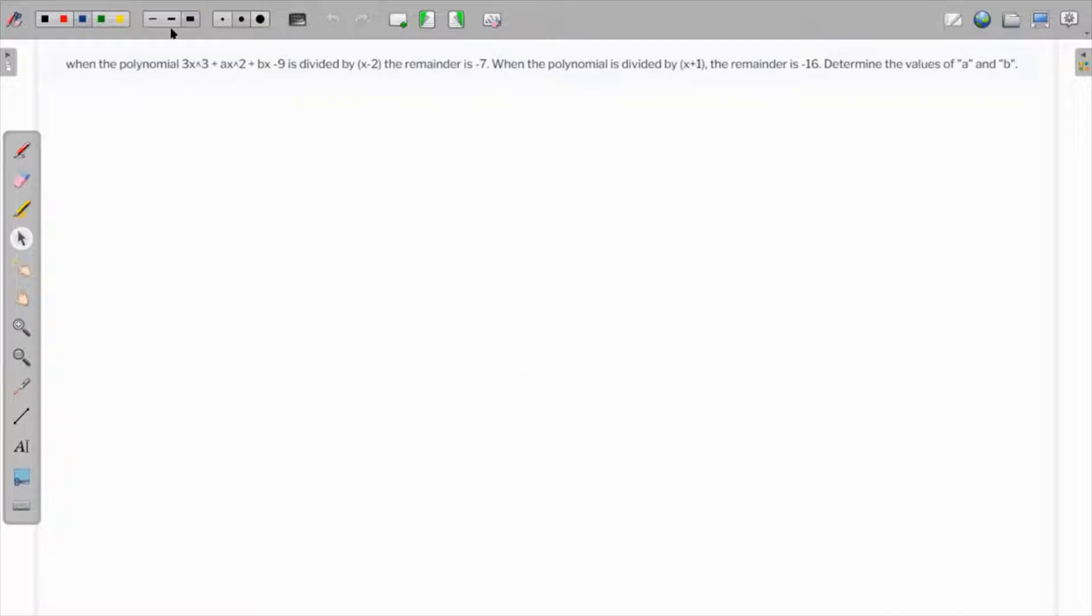This question: when the polynomial is divided by x minus 2, the remainder is negative 7. When the polynomial is divided by x plus 1, the remainder is negative 16. We need to find the values of a and b.